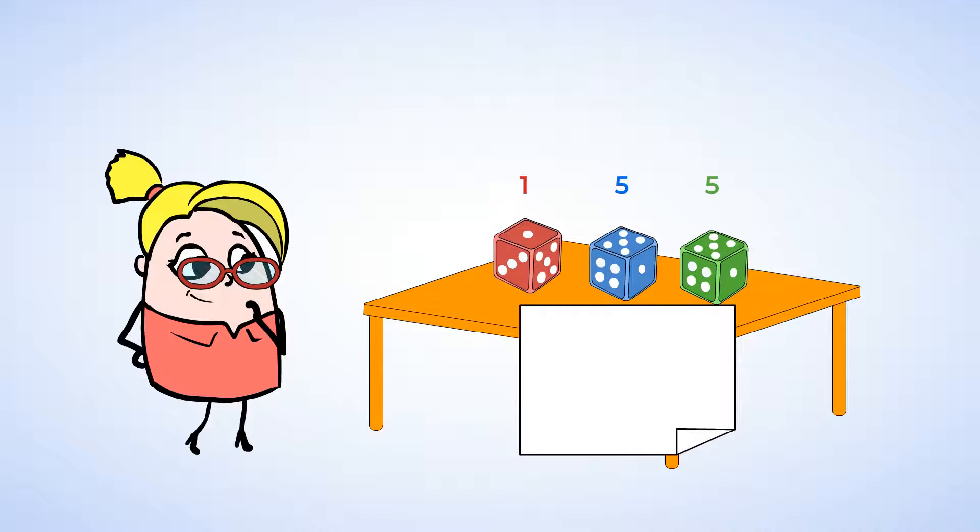Now we have to add together one plus five plus five. But wait a minute, Jenny already knows that five plus five equals ten. So first, she's going to group the blue and green dice together to make a ten. Now, she just has to add one plus ten. One plus ten equals eleven. Yeah, that was fast. And just like that, she added up three numbers. One plus five plus five equals eleven.